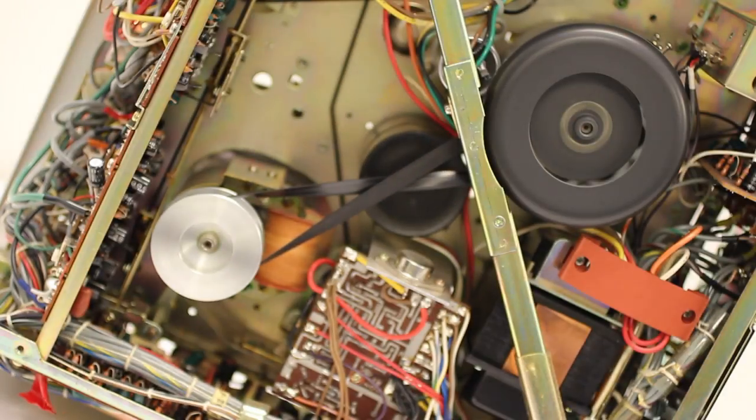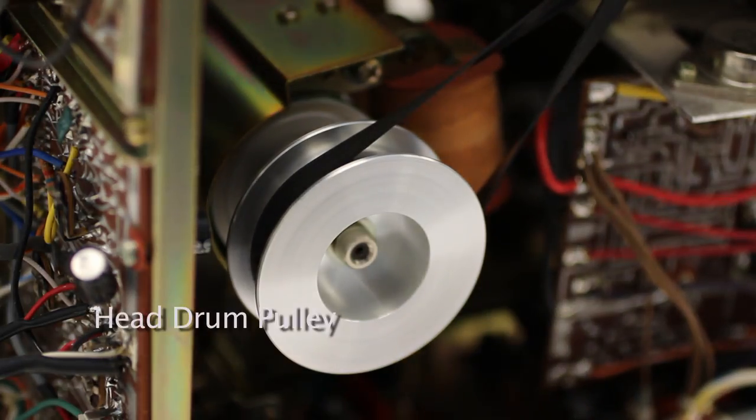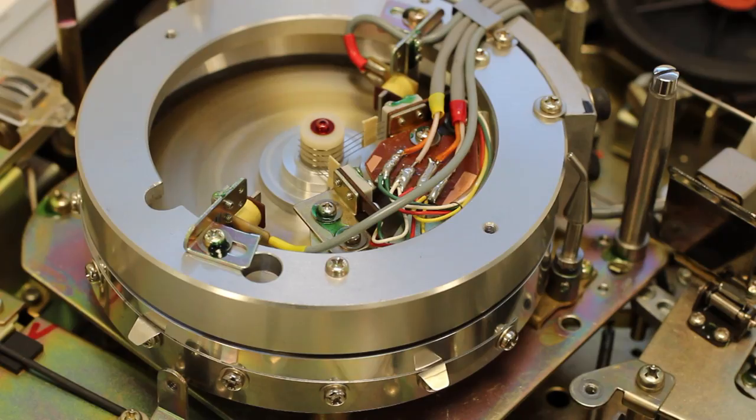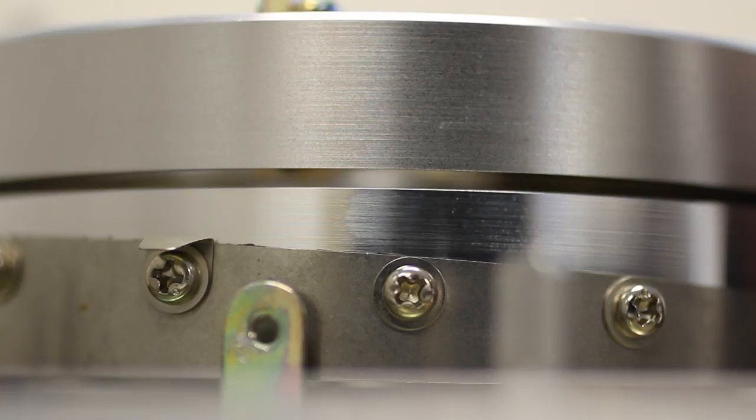At the same time, the drum motor uses the single belt system to spin the head drum pulley, which moves the video heads inside the drum.